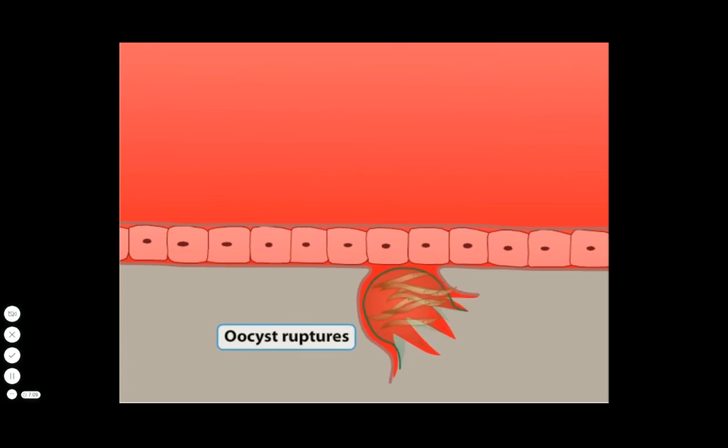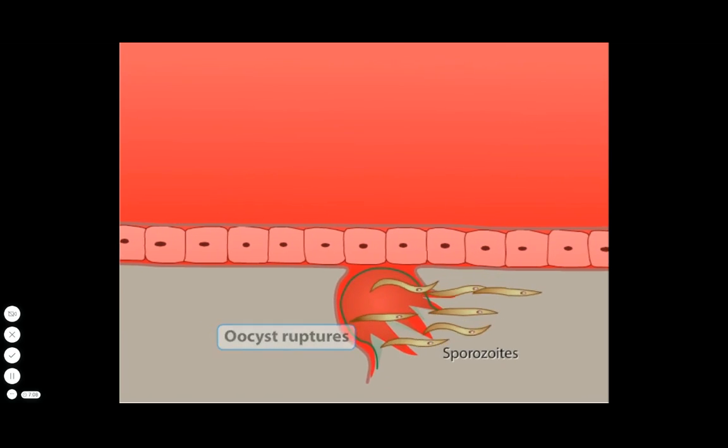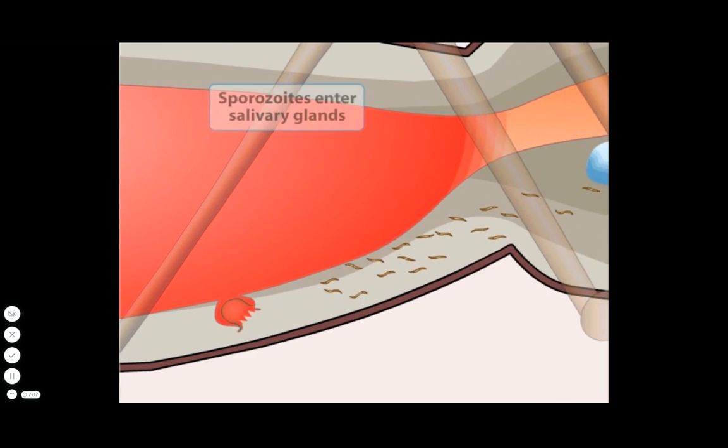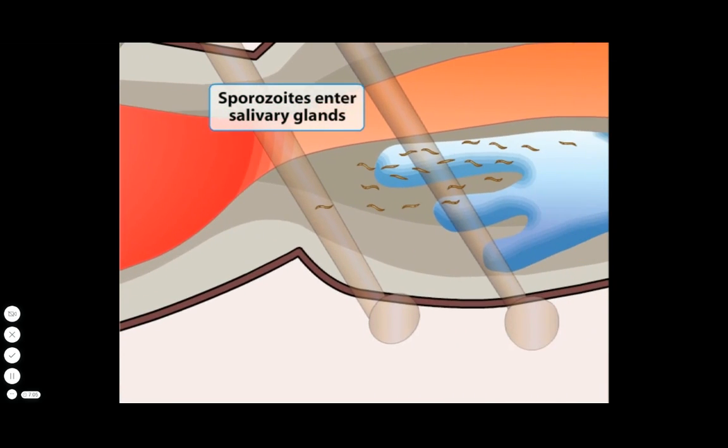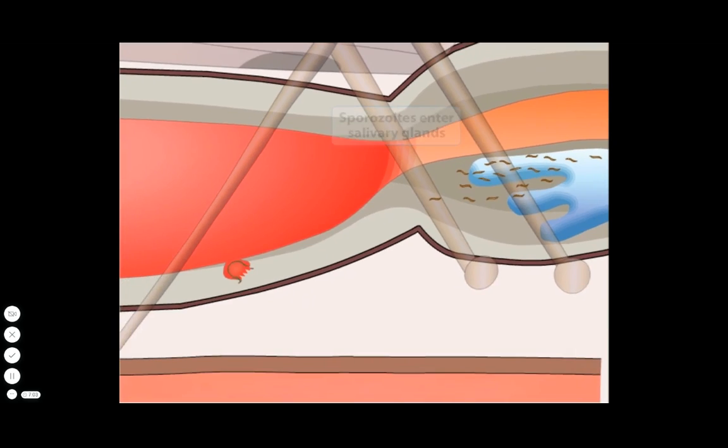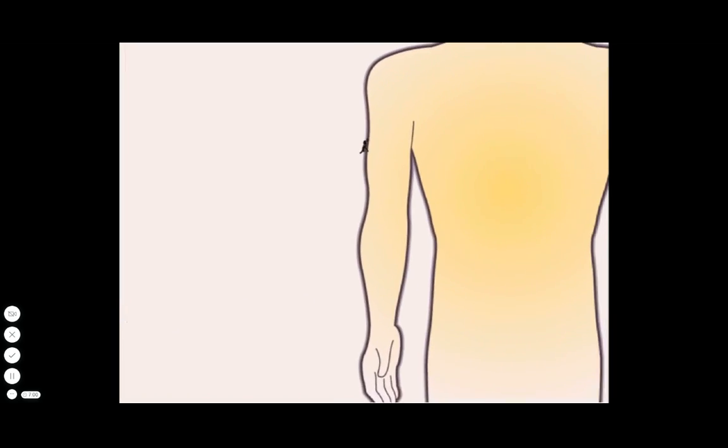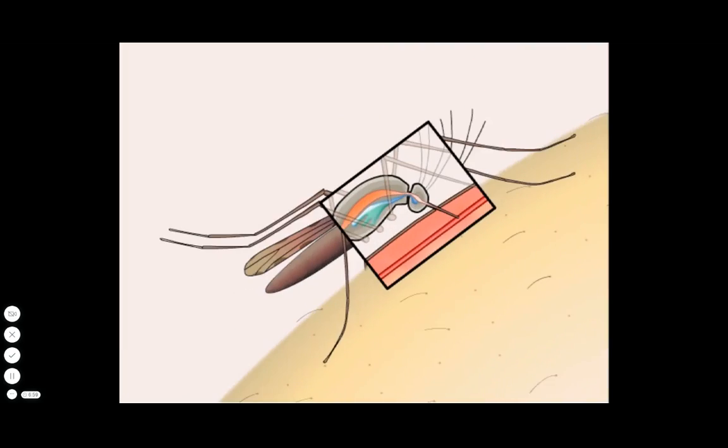The oocyst ruptures and releases the sporozoites, which migrate to the salivary glands. From the salivary glands, the sporozoites can infect the next human host and repeat the Plasmodium life cycle.